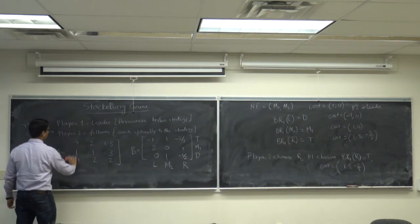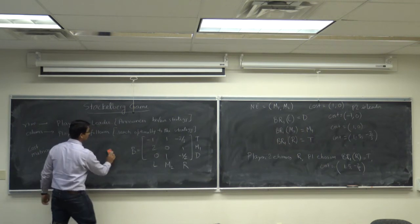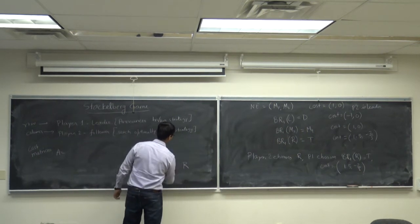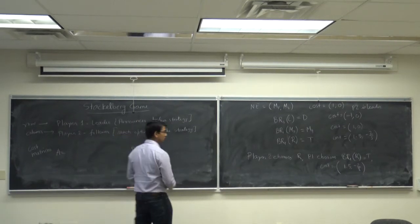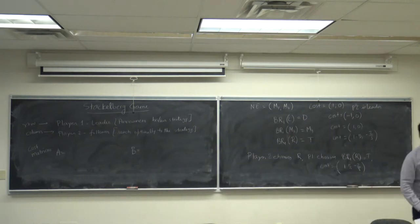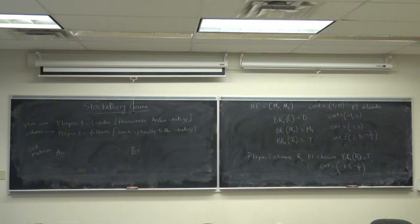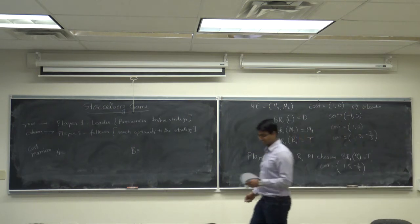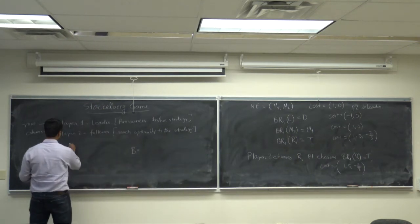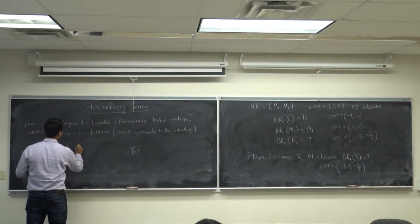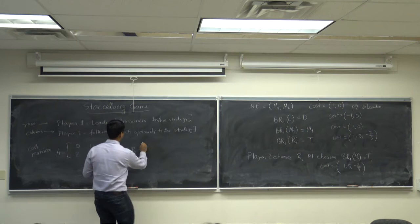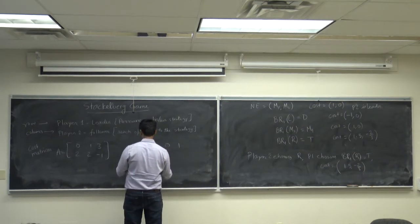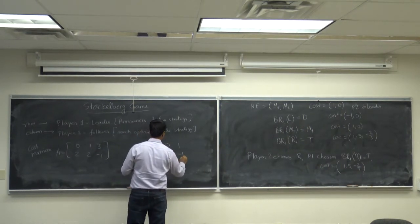Let's look at another game with a different payoff matrix. A question: how do you choose the best response if the costs are equal? That's the next example. The new game is: A equals [0, 1, 3; 2, 2, minus 1] and B equals [0, 0, 1; minus 1, 0, minus 1]. Let's call the rows Top and Down, and columns L, M, R.